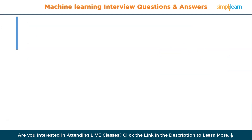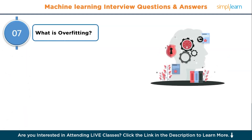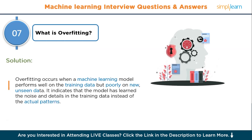Moving to question number seven: what is overfitting? Overfitting occurs when a machine learning model performs well on the training data but poorly on new, unseen data. It indicates that the model has learned the noise and details in the training data instead of the actual patterns.